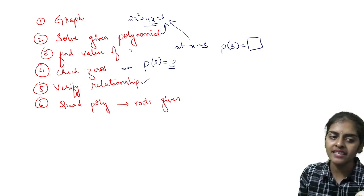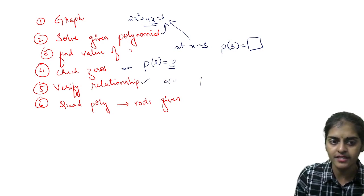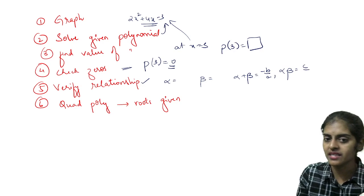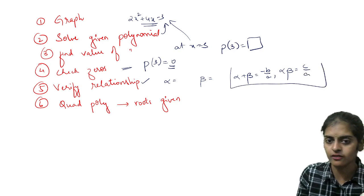Verify the relationship: if alpha and beta are zeros, then alpha plus beta should equal -B/A and alpha beta should equal C/A. Sum of the zeros, product of the zeros.